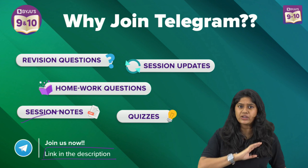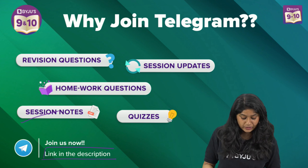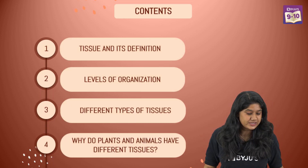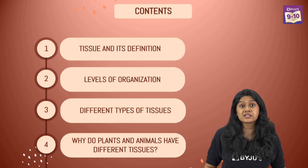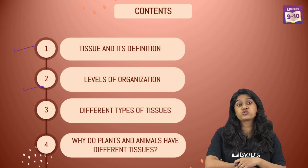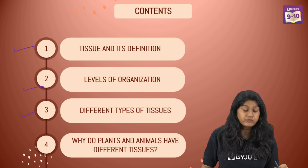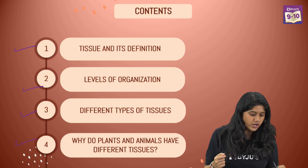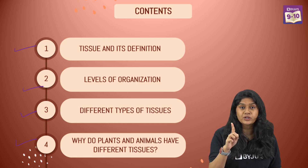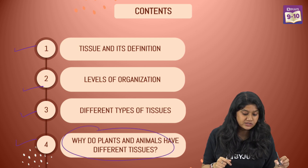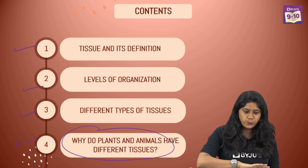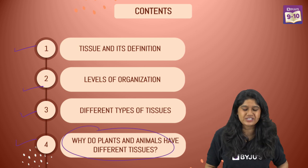Now let's talk about the content for today's class. First we will be discussing about tissues and its proper definition. Then we will be discussing about the level of organization, which is really very important. Then different types of tissues, and of course why plants and animals have different types of tissues — a very important question that you must have seen in question papers as well.